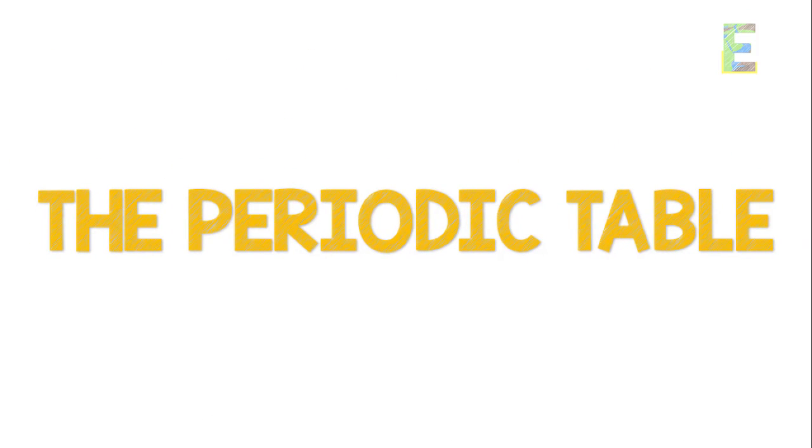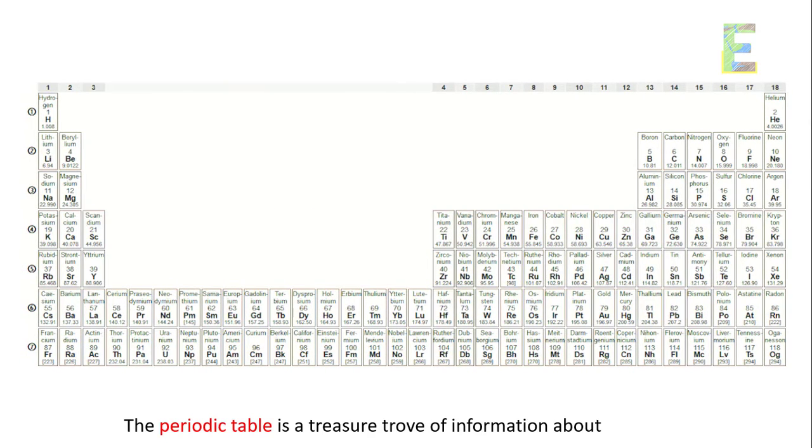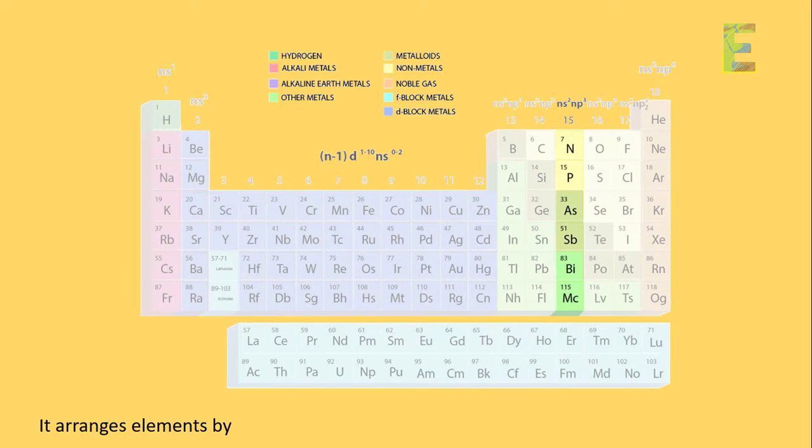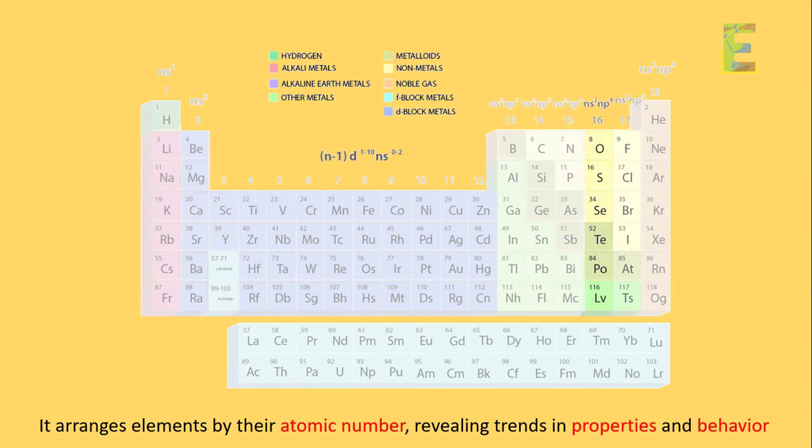The periodic table. The periodic table is a treasure trove of information about elements. It arranges elements by their atomic number, revealing trends in properties and behavior.